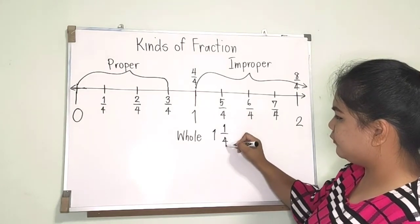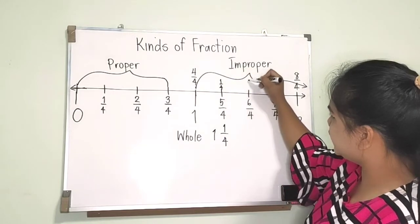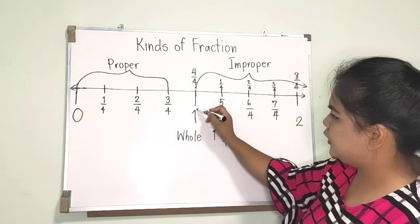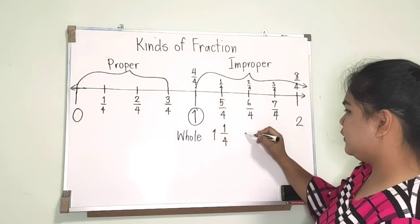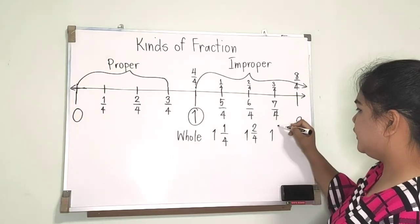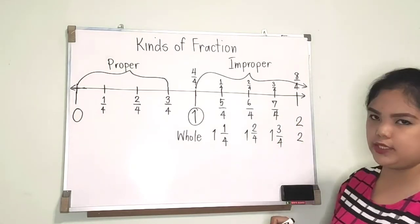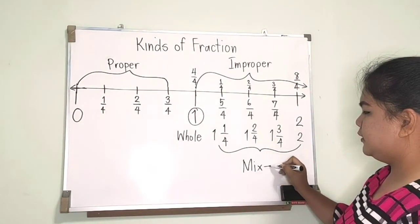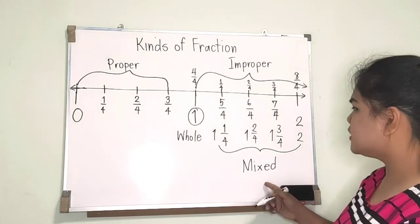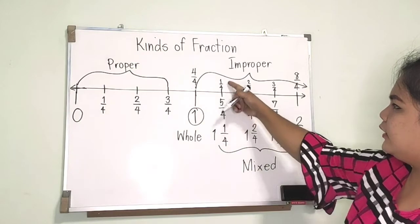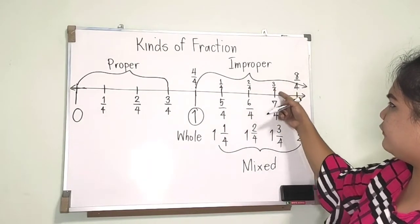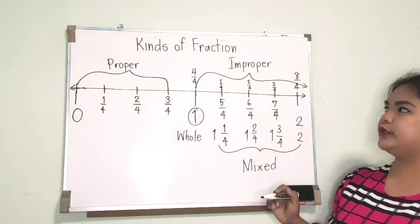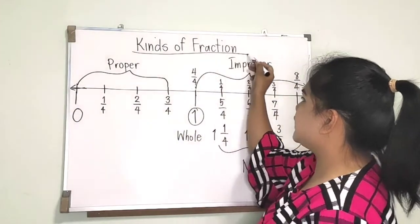Some texts will write those same values as mixed fractions: one and one-fourth, one and two-fourths, one and three-fourths, and then two. These are called mixed fractions because you combine the one whole with the fractional parts — one-fourth, two-fourths, three-fourths — and then four-fourths again.